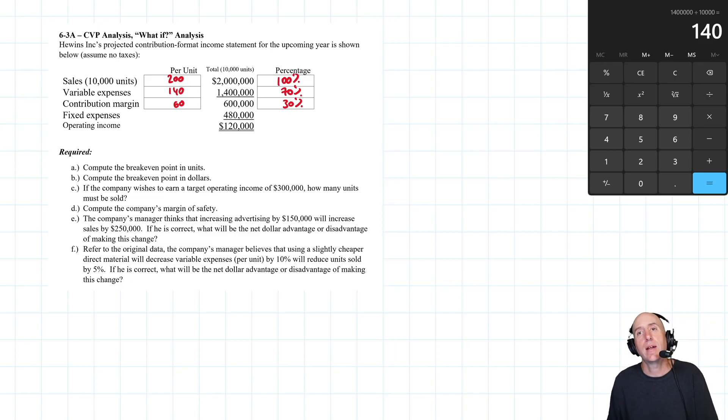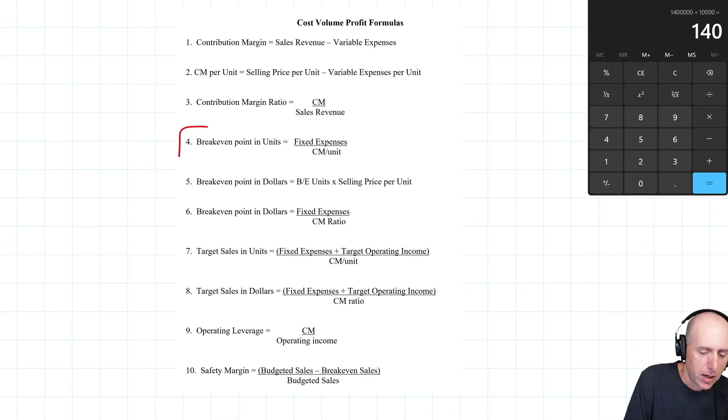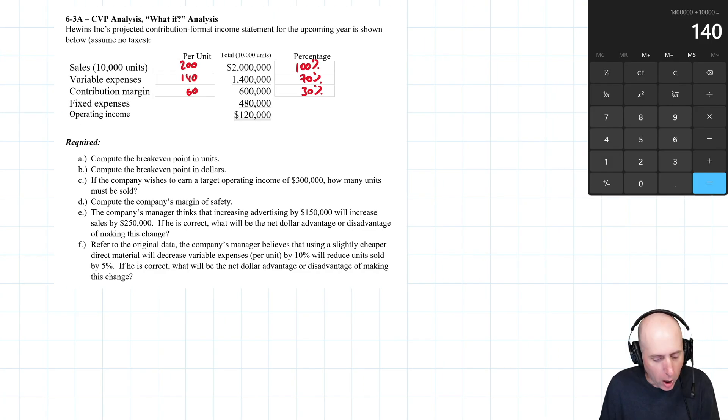It says compute the breakeven point in units. Hopefully you've got this memorized by now, but if you don't, there is a formula sheet at the start of the chapter. Breakeven point in units is fixed expenses divided by contribution margin per unit. Our company's fixed expenses, $480,000. Our contribution margin per unit, 60.